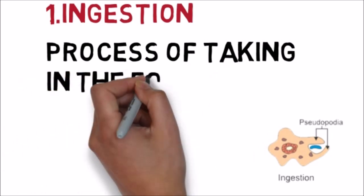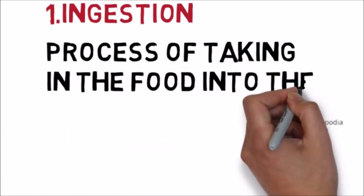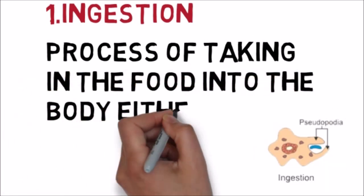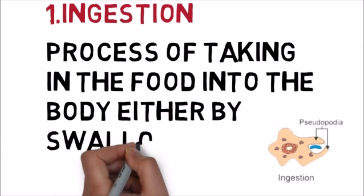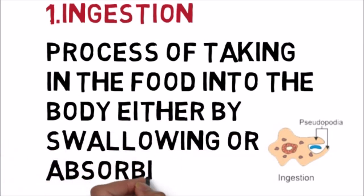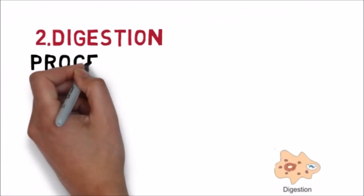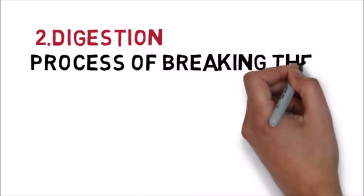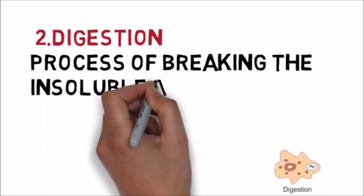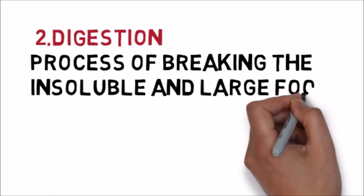Ingestion is the process of taking in food into the body either by swallowing or absorbing. Amoeba uses pseudopodia to propel, encircle, and engulf food by forming a food vacuole. This entire process is called phagocytosis.